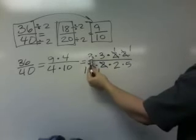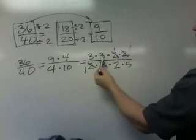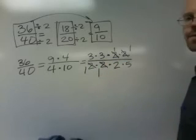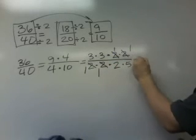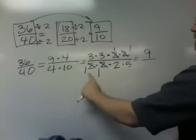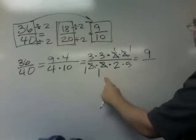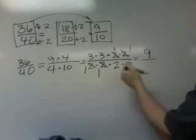So now, instead of 3 times 3 times 2 times 2, we now have 3 times 3 times 1 times 1. And 3 times 3 is 9 times 1 times 1 is 9. And down here, instead of having 2 times 2 times 2 times 5, we have 1 times 1 times 2 times 5, which equals 10.